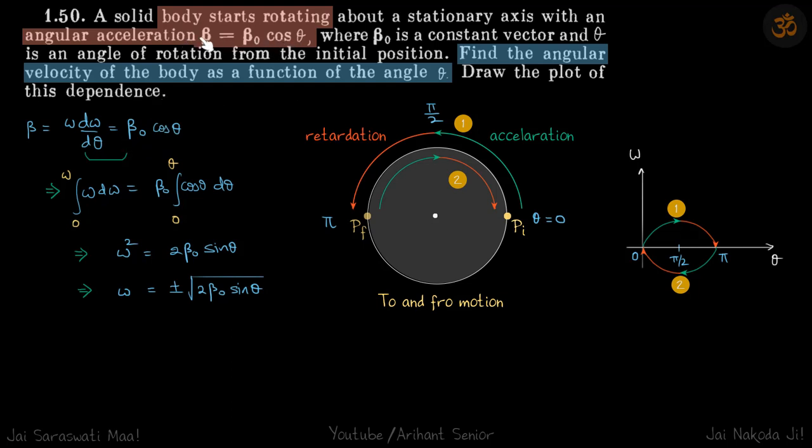So for that, we will write beta as omega d omega by d theta. So we just take d theta to this side and integrate from omega goes from 0 to omega, and theta goes from 0 to theta. So this gives omega squared is equal to 2 beta naught sin theta, or omega is equal to plus minus root 2 beta naught sin theta.